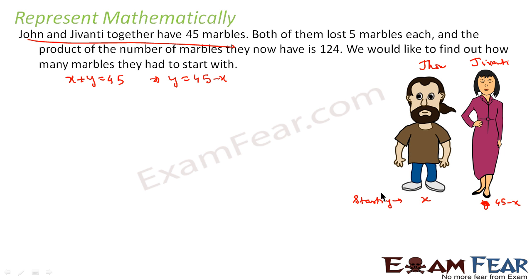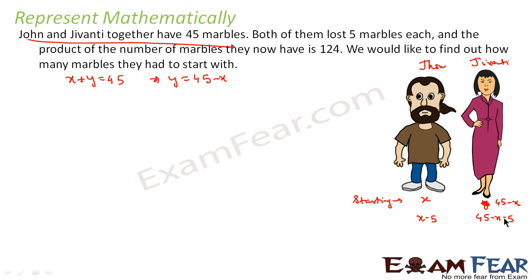Now both of them lost 5 marbles each. If you subtract 5 from John's count, he has x - 5 marbles. Jivanti also lost 5 marbles, so she now has 45 - x - 5 marbles. That was the original count, and from that they have each lost 5 marbles.